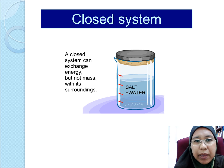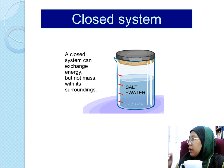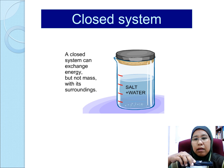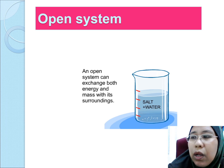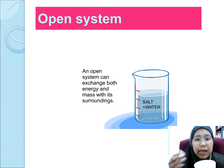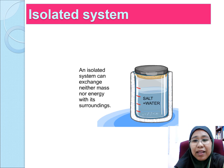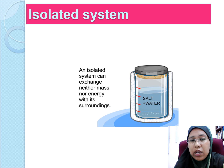A closed system is a system whereby it can exchange energy but not mass with its surroundings. For example, you have a regular coffee and you close it so that the water vapor cannot escape. An open system lets both energy and mass go out — just open the lid of the container. For an isolated system, imagine a coffee cup with padded polystyrene material. The isolated system can exchange neither mass nor energy with its surroundings.